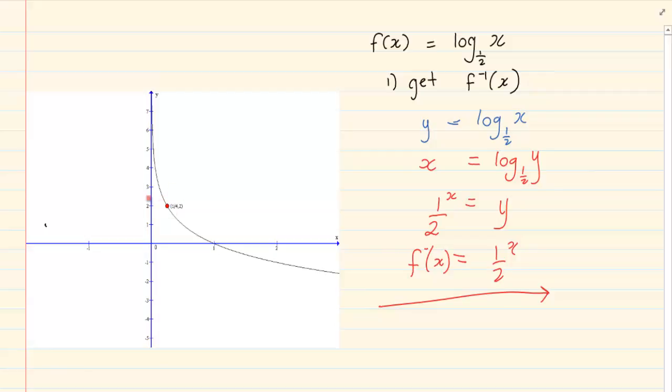Now how do we draw the inverse? We know that we have a coordinate quarter and 2. Which means now you are going to have a coordinate 2 and a quarter. So x will be 2 and y would be a quarter. And then we have x is 1 and y is 0. We would have that y is 1 and x is 0.